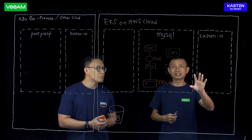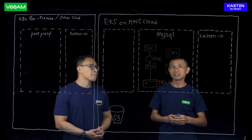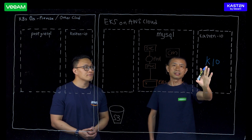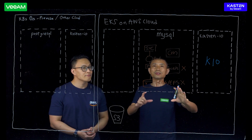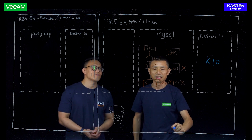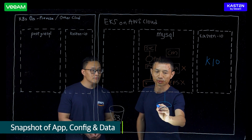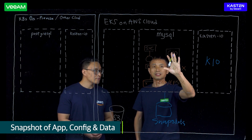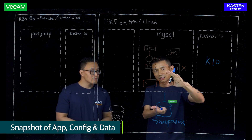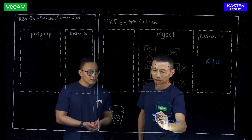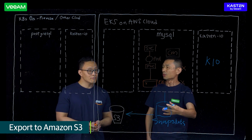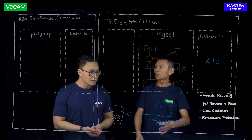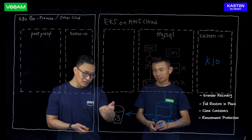Kasten K10 — that's our product name — can help you address all these different challenges. Kasten K10 is typically running in a separate namespace called Kasten-IO. Once Kasten K10 is installed to the EKS cluster, we allow you to treat the whole MySQL application as one operational unit. From here, we allow you to take a snapshot of all of your Kubernetes applications, your configurations, and your data. We also allow you to make another copy to Amazon S3, which is more reliable and lets you leverage cheaper cloud storage for long-term retention. You can also enable object lock to avoid ransomware attacks. S3 is also highly durable and highly available.